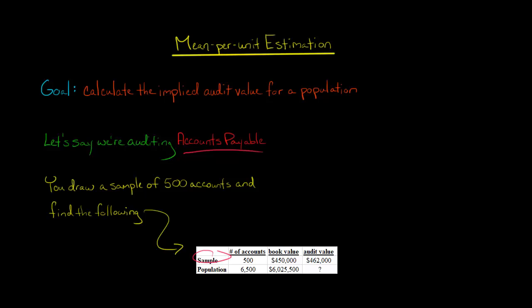And then we draw a sample of 500 accounts, which have a book value of $450,000, and we find that the audit value of these 500 accounts payable is actually $462,000. The question is, what is the audit value for the entire population? We didn't observe the population, but now we can find what the implied audit value is from the data that we have here.